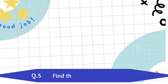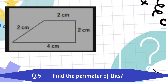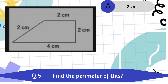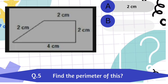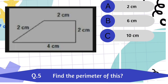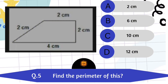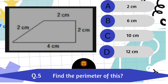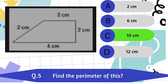Question number 5. Find the perimeter of this. A. 2 cm. B. 6 cm. C. 10 cm. D. 12 cm. 10 cm is the correct answer.